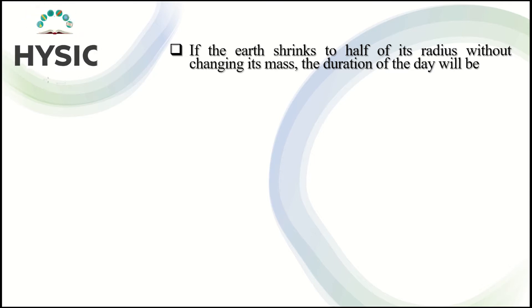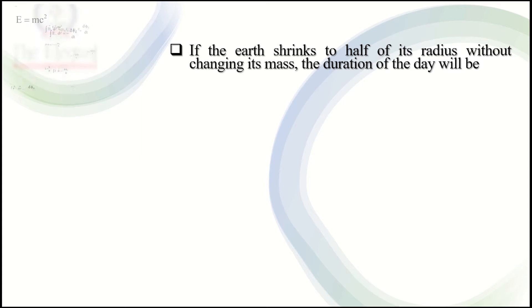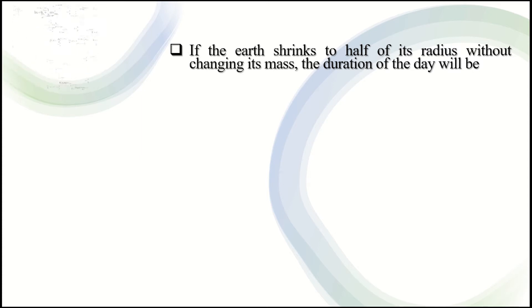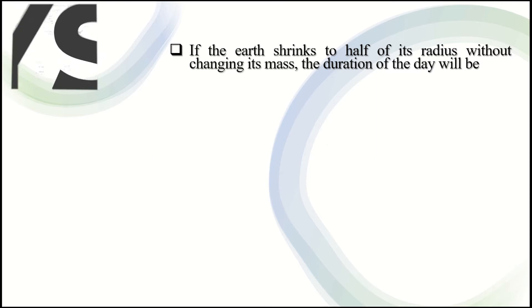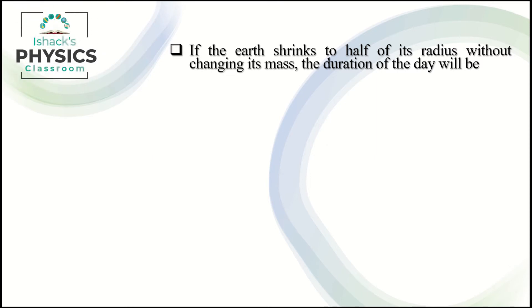The Earth's radius is 6,400 km. It becomes 3,200 km — half of the original — without changing its mass. The problem is trivial to solve.